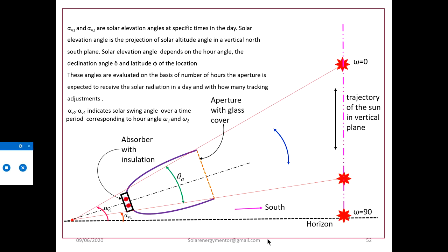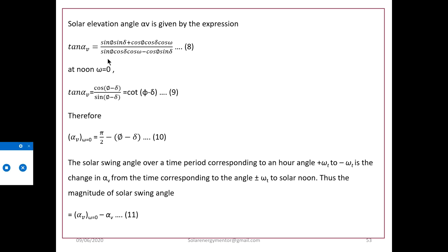Values of solar elevation angle alpha-v can be calculated by: tan(alpha-v) = [sin φ sin δ + cos φ cos δ cos ω] / [sin φ cos δ cos ω − cos φ sin δ]. At noon, ω equals zero, so this simplifies to: tan(alpha-v) = cos(φ − δ) / sin(φ − δ), which is cot(φ − δ). Therefore the elevation angle at noon becomes π/2 minus (φ − δ).